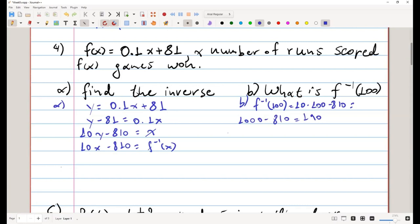The original function was accepting numbers of runs scored and it was giving back, the output was the games won. That implies that for the inverse function, these things are inversed. The previously output is now the input. That is that in order to win 100 games, 190 numbers of runs are scored.